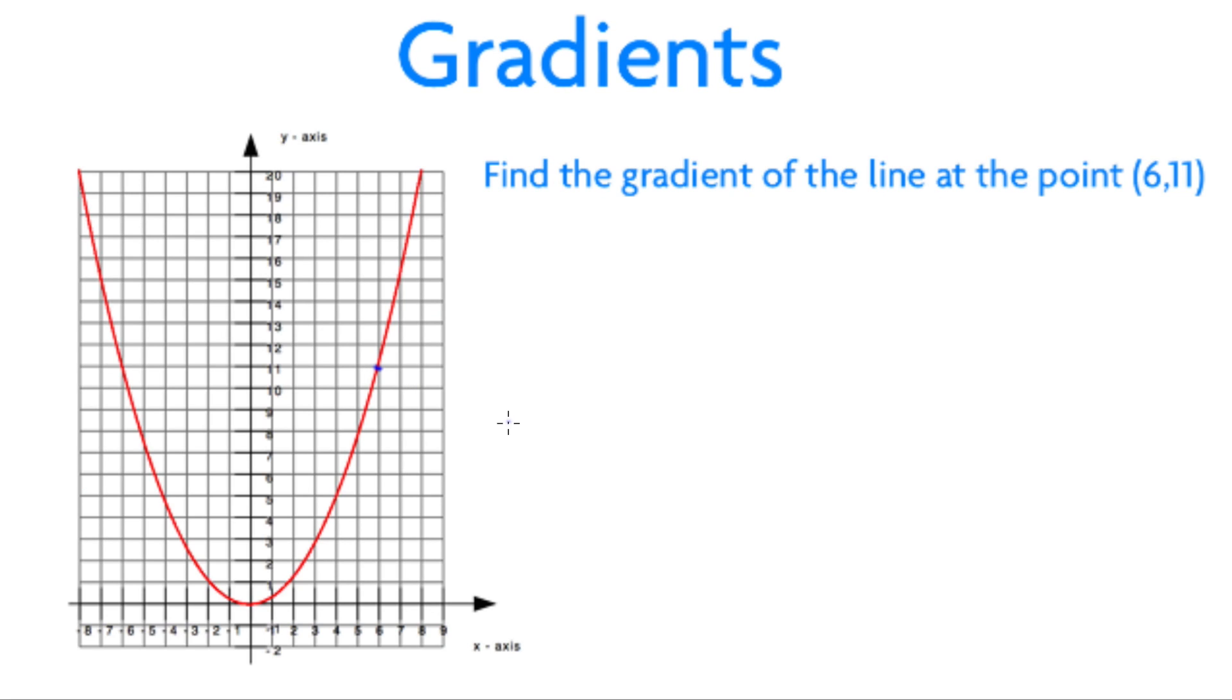Now we move on to another problem, finding the gradient of a point on a curve. We need to ensure the sketch we've made of our curve is accurate. If asked to draw by hand, ensure the line is curved and not a series of straight lines connecting reference points. To calculate the gradient of this curve, we must draw a tangent. A tangent is a line that touches the curve at only one point.